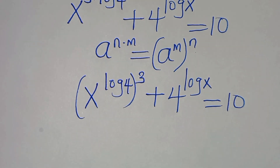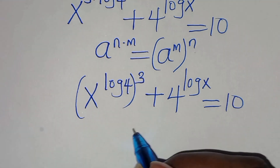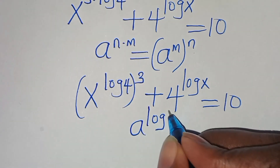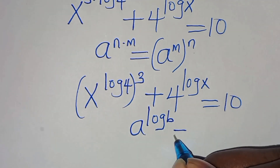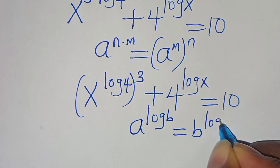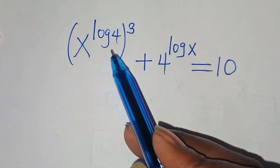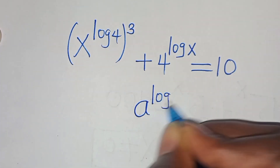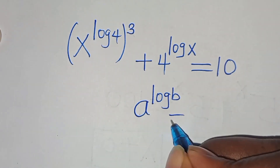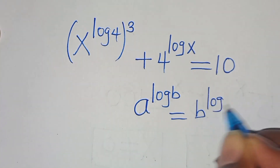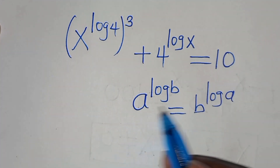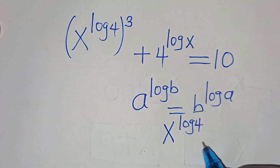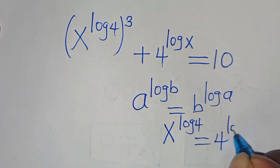The next step uses the property that a^(log b) equals b^(log a). We have x to the power of log 4 in the form a^(log b), which we can express as b^(log a). So x to the power of log 4 can be rewritten as 4 to the power of log x.